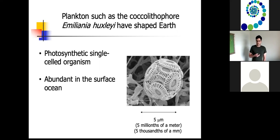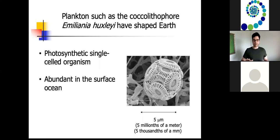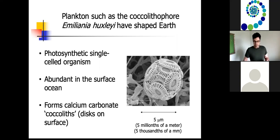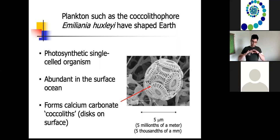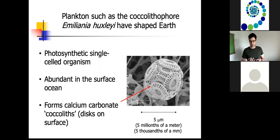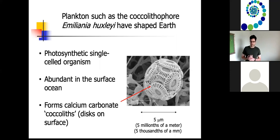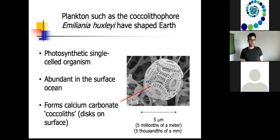They're very, very small — on the order of a millionth of a meter, or five microns. Even though they're very tiny, there are many billions of them in the ocean. Something really interesting and unique about these organisms is these liths on the outside of the cell, marked with the red arrow here. These are called coccoliths, and they are calcium carbonate — one of the main components of chalk. We don't know exactly why these organisms have these liths on the outside of their shells, but one hypothesis is that they serve as a defense against viruses and other grazers.